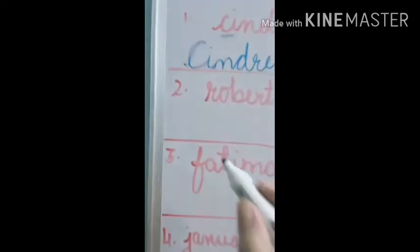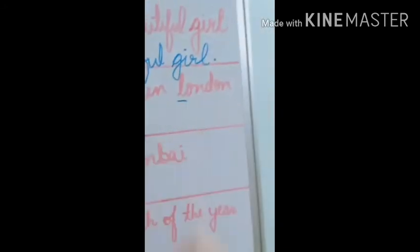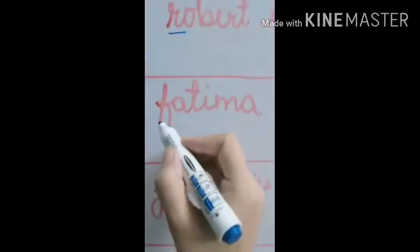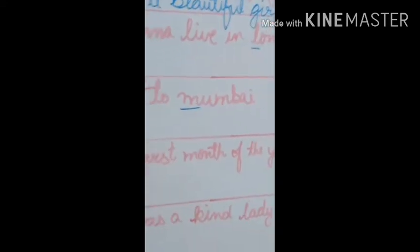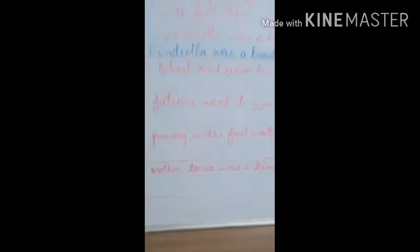You have to take care that a name begins with a capital letter — like Robert, R is capital. London is the name of a country, so L is capital, and at the end put a full stop. Next, Fatima — F capital — went to Mumbai. Mumbai is the name of a city, so M will be capital, and at the end put a full stop. Like this, do the rest of the parts also.